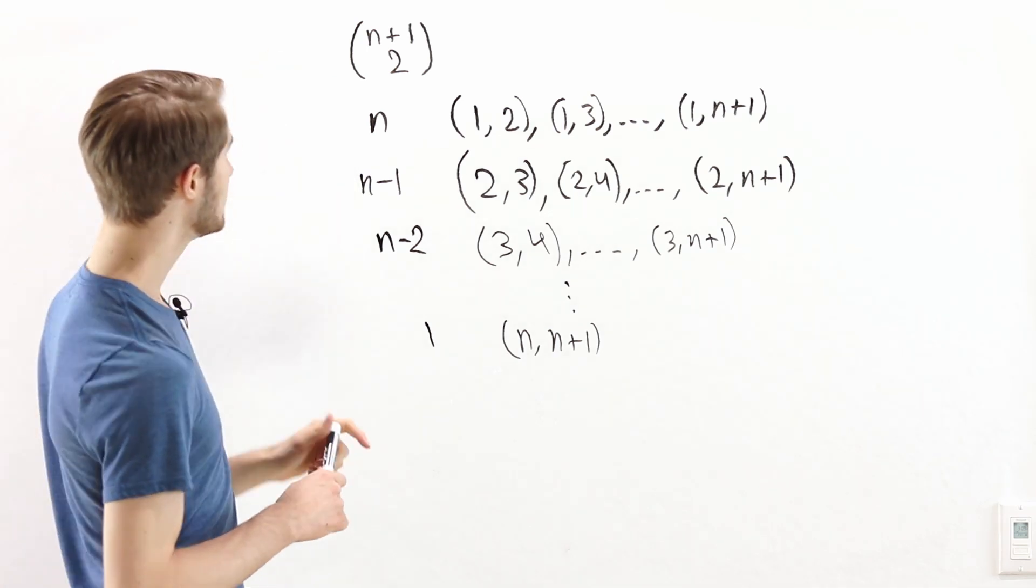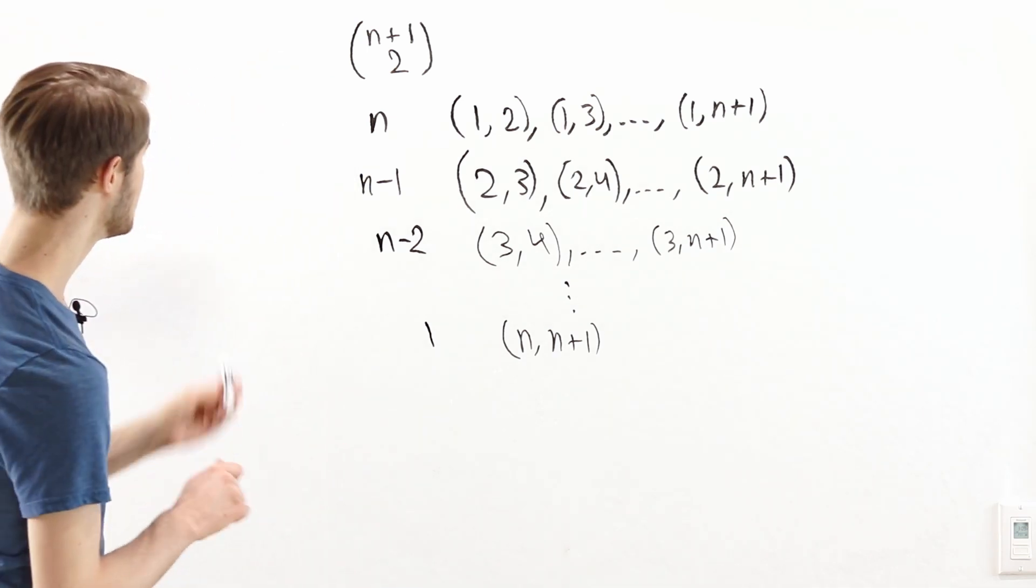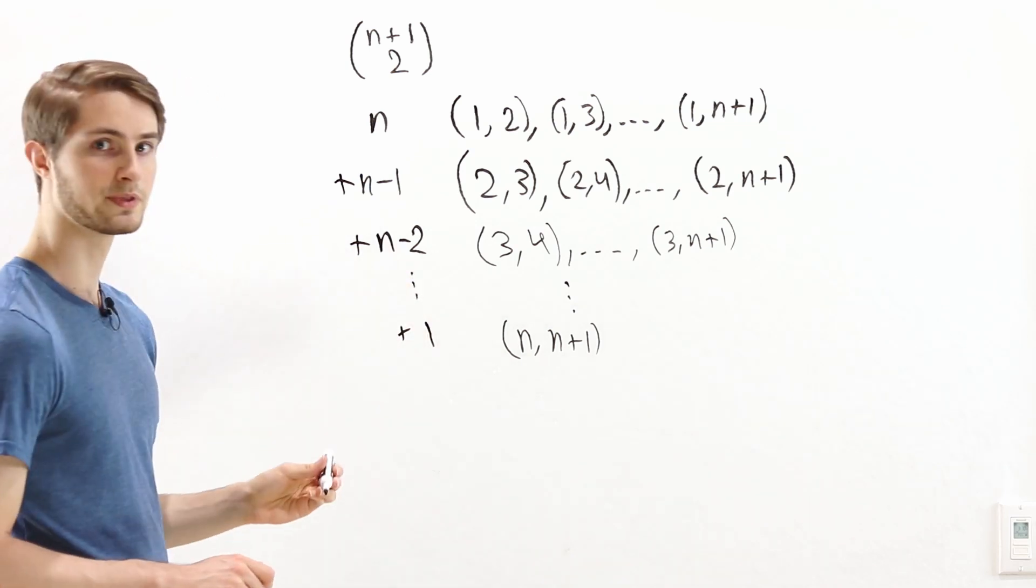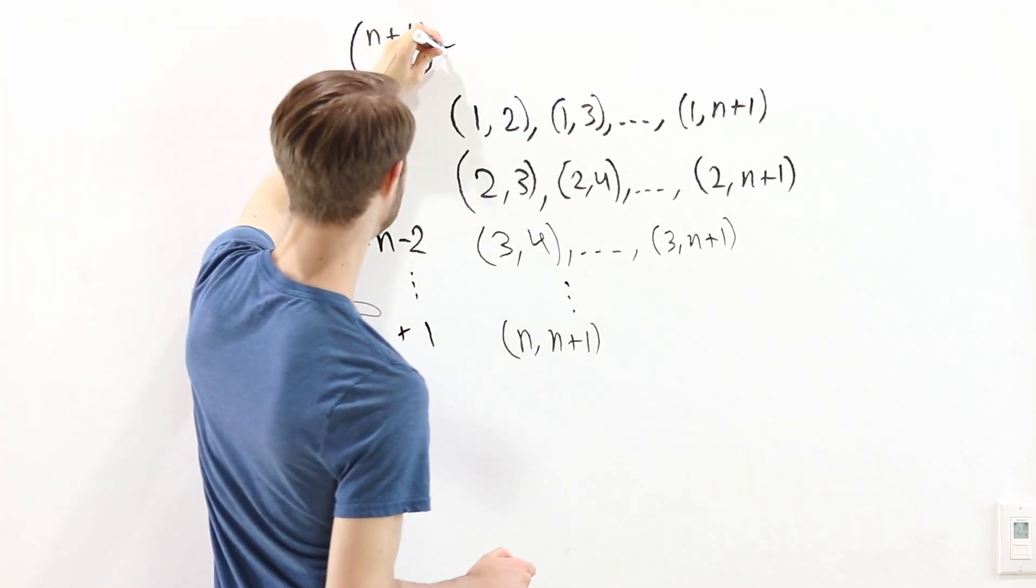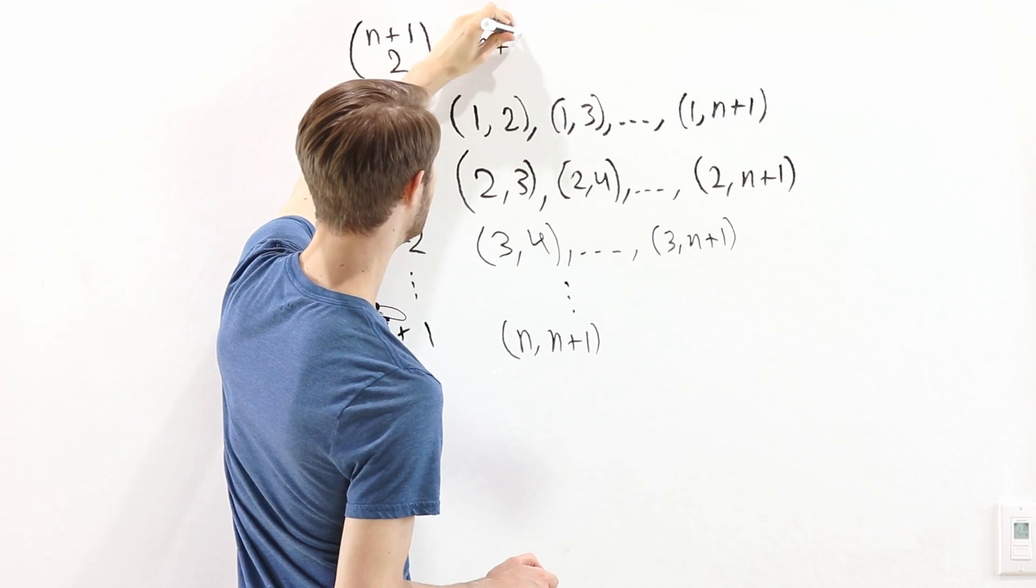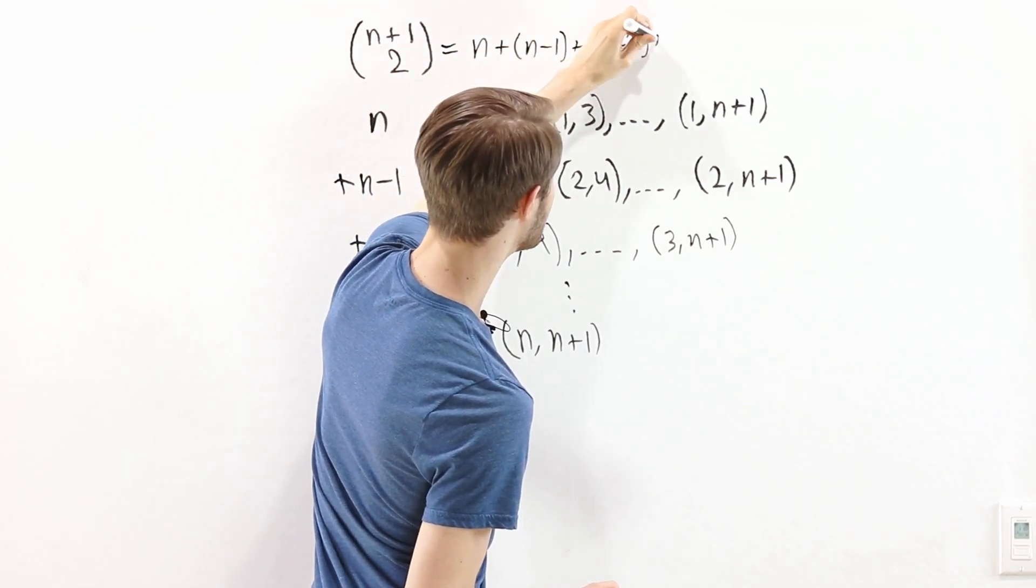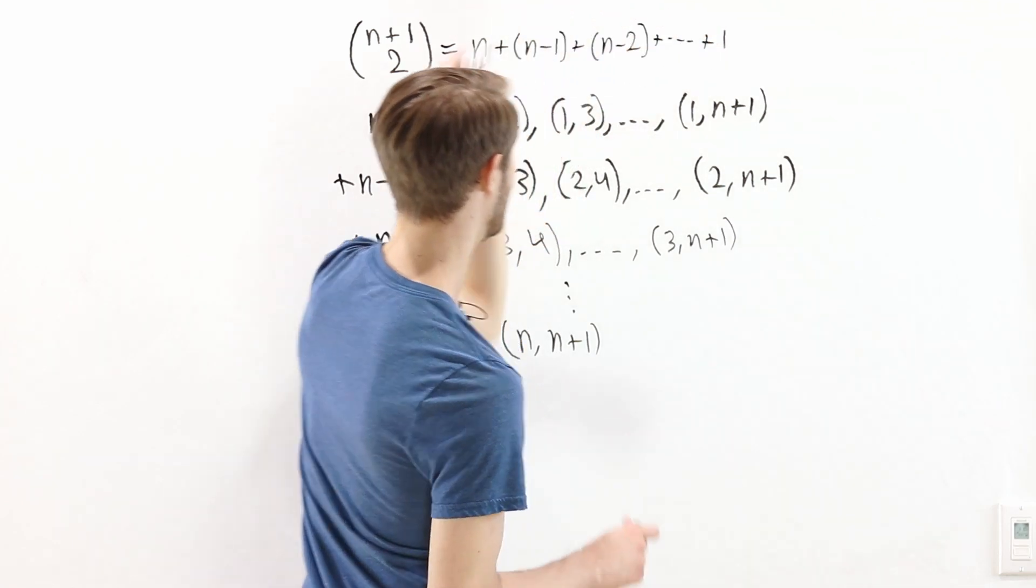So the value of n plus 1 choose 2 is just the sum of all of these values. Which means that n plus 1 choose 2 is equal to n plus n minus 1 plus n minus 2 plus n minus 3 all the way down to 1.